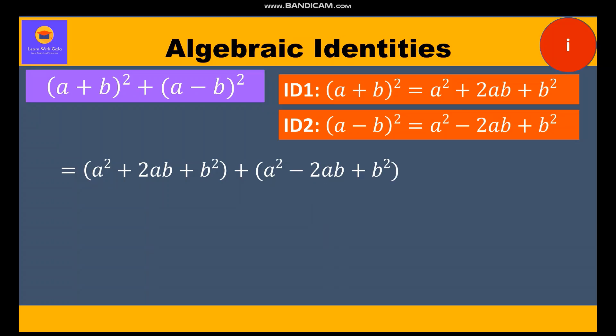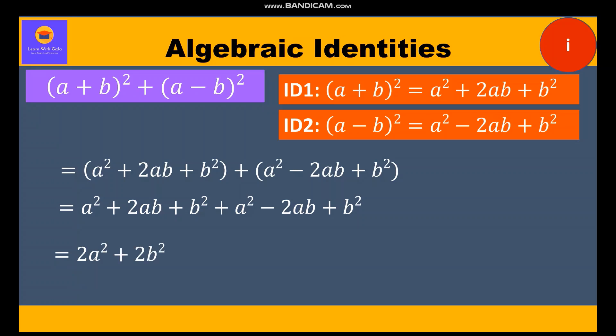Opening the brackets we get a² + 2ab + b² + a² - 2ab + b². The +2ab and -2ab cancel; a² + a² = 2a² and b² + b² = 2b². So we get 2a² + 2b², and taking 2 common: 2(a² + b²). This is our final answer.